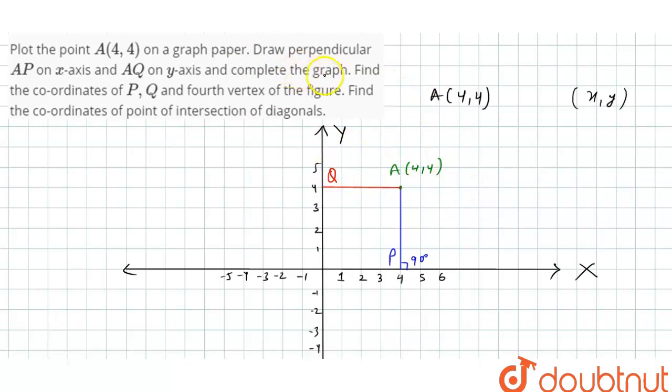So now we know that, find the coordinates of P, Q and fourth vertex. This point will be, the coordinate of X is 0 and Y is 4, so it will be (0,4). And here, the coordinates of X is 4 and Y is 0. So these are the P and Q points.